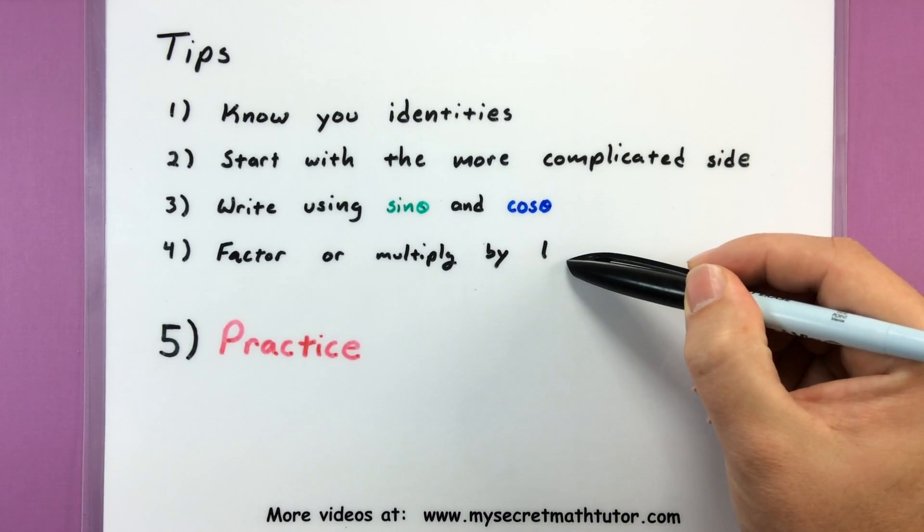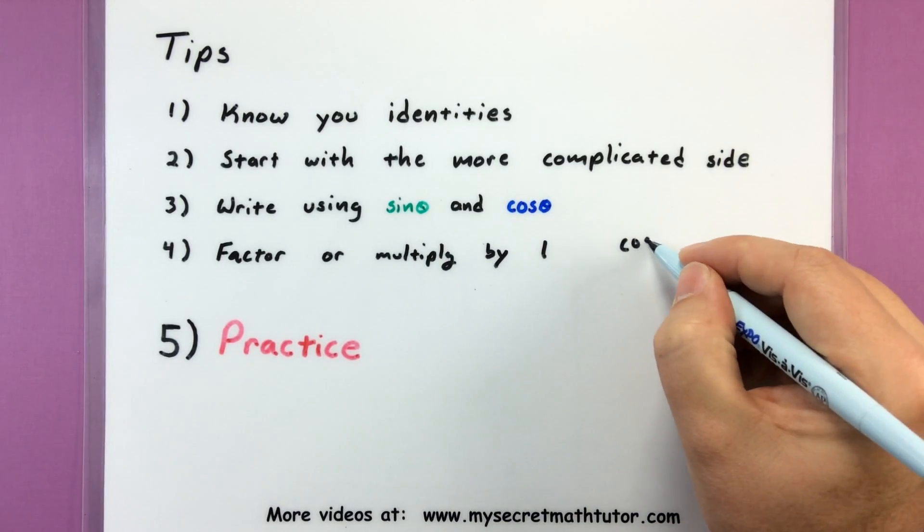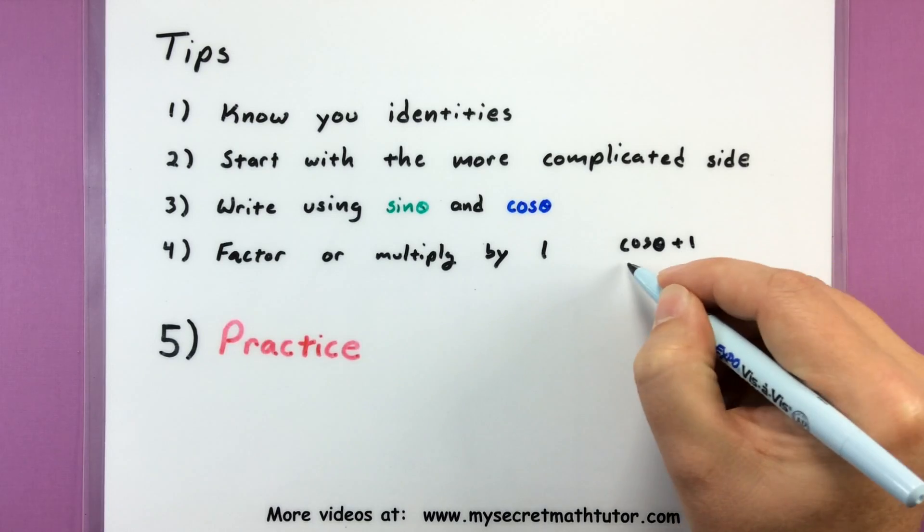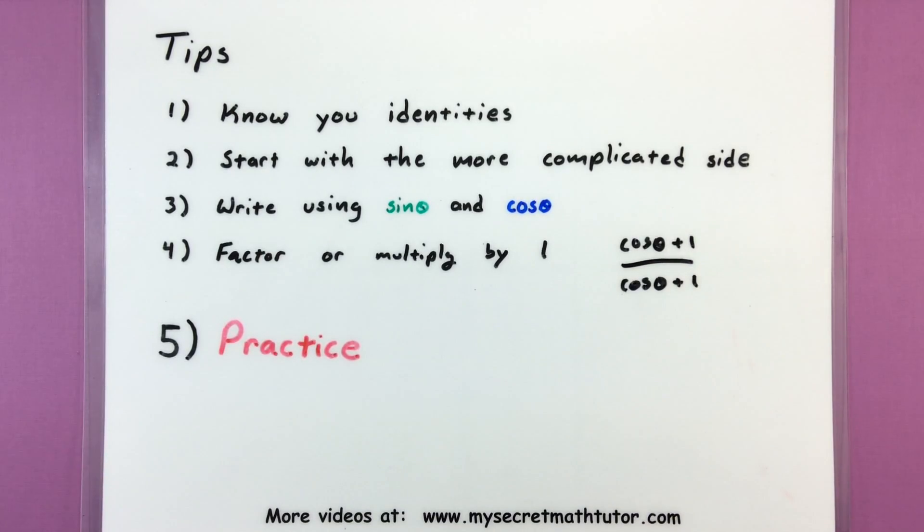We might also factor or multiply by one to go ahead and change how a fraction looks. This one's a little bit difficult to describe when I say multiply by one. What I mean by that is we might multiply by expressions like cosine plus one all divided by cosine plus one and that's technically equal to one but it's usually an expression like that that can help me change how something looks.